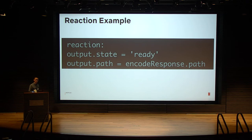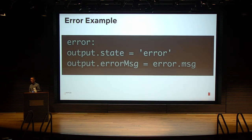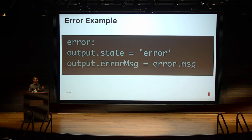Reaction handles responses: once the remote computation is done or the service request returns, the reaction block is invoked automatically. In this example, we simply set the output state to ready and copy the path from the response into our output path. If something unexpected happens — an exception thrown at your function or a remote call returning a 500 error — the error block gets invoked. In this example, we set the output state to error and copy the error messages to our output.